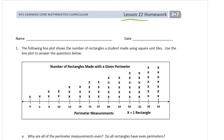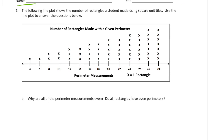Welcome to the homework for lesson 22. This is module 7 of third grade. Put your name here first please. The following line plot shows the number of rectangles a student made using square unit tiles. Use the line plot to answer the questions below. It has a title: number of rectangles made with a given perimeter. The perimeter measurements are in plain linear units, not square units, and each X is one rectangle made with that perimeter.